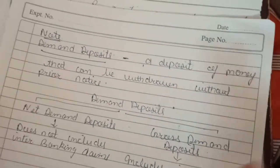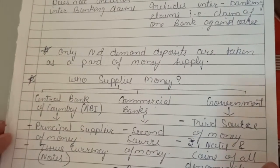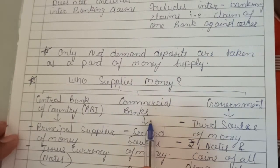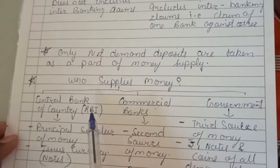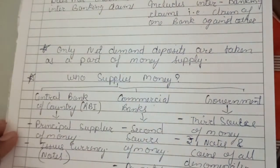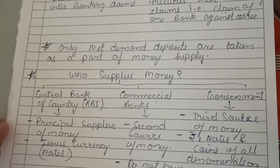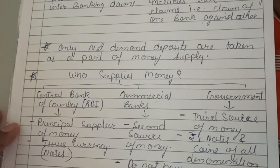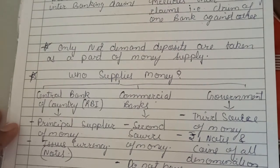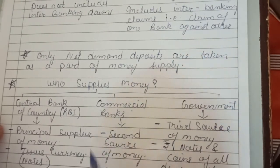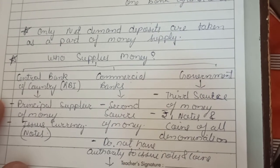The last topic for today is: who are the suppliers of money? There are three suppliers. First is the central bank — in our country, the RBI, Reserve Bank of India. Second is commercial banks — we will cover commercial banks in detail in the next lecture as it is a long topic. Third is the government. The central bank is the principal source of money. Central bank issues notes — all notes except the one rupee note.